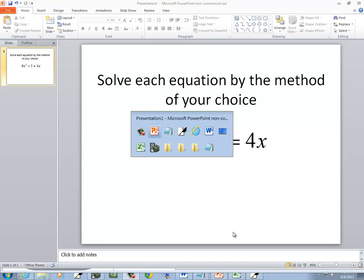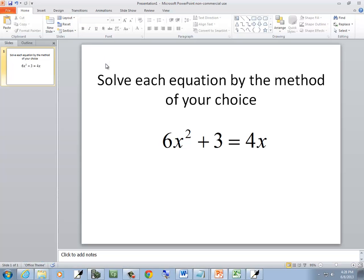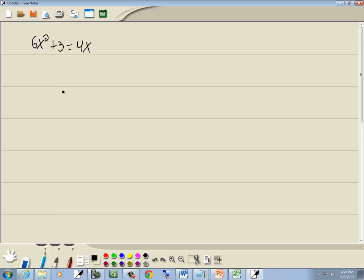Let's take a look at this problem. We've got 6x squared plus 3 equals 4x. Now it says solve each equation by the method of your choice. No matter what, unless we're going to use square root property, we want to get 0 on one side. So I'm going to go ahead and bring that 4x to the left side. So we've got 6x squared minus 4x plus 3 equals 0.